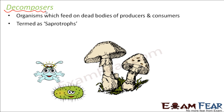Decomposers are also known as saprotrophs. Sapro means dead and decaying matter, so they depend on dead and decaying matter, hence they are called saprotrophs. To summarize, we have three categories of living organisms: producers are called autotrophs, consumers are called heterotrophs, and decomposers are called saprotrophs.